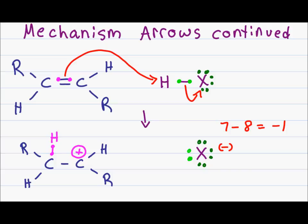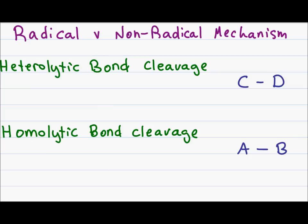The two electrons which held hydrogen to atom X have collapsed onto X, giving X an additional lone pair for a total of eight electrons. Since halogens should only have seven electrons, having eight gives a formal charge of negative one. To verify the mechanism: starting charge is zero on the carbon molecule and zero on HX, totaling zero. Looking at products, I have a positive charge on the first molecule and a negative charge on the second, again totaling zero.